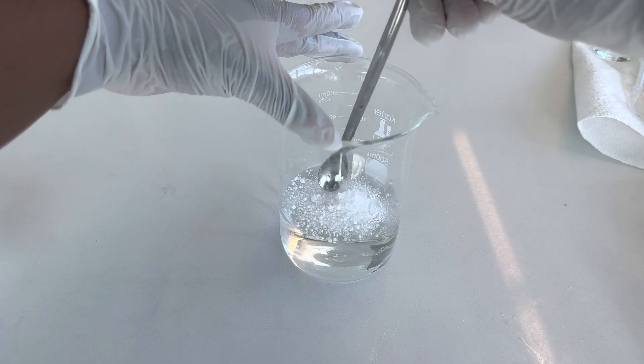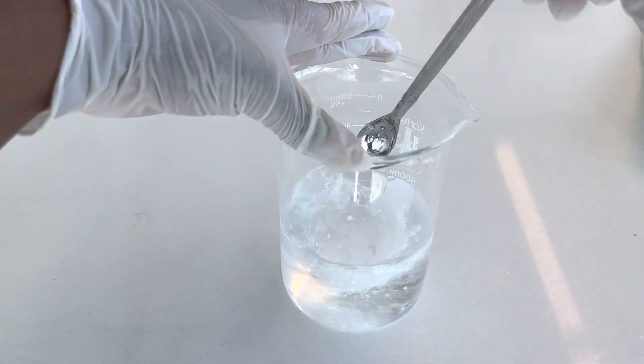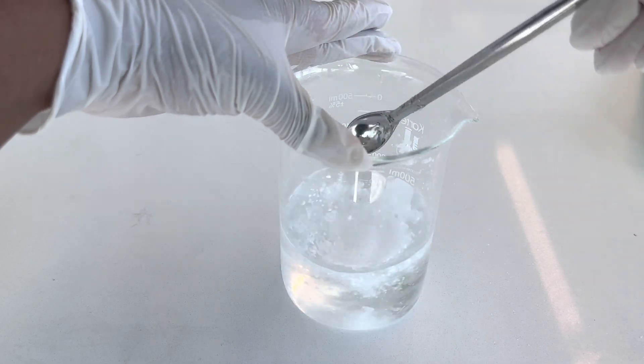Next I add in 1.2 grams of Carbomer and vigorously stir. As you can see, Carbomer does not hydrate quickly by just stirring.